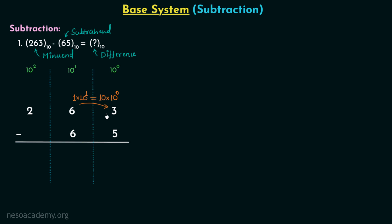Instead of 3 we now have 13, and instead of 6 we have 5. We subtract 5 from 13, which gives us 8. Moving on to the tens place, 5 minus 6 gives us minus 1, and again we have a situation in which the digit of the subtrahend is greater than the digit of the minuend, so we have to perform borrowing again.